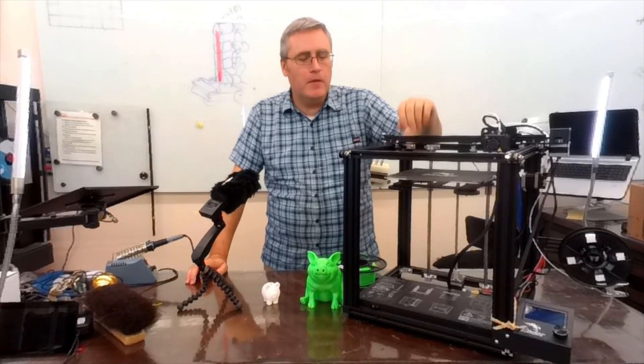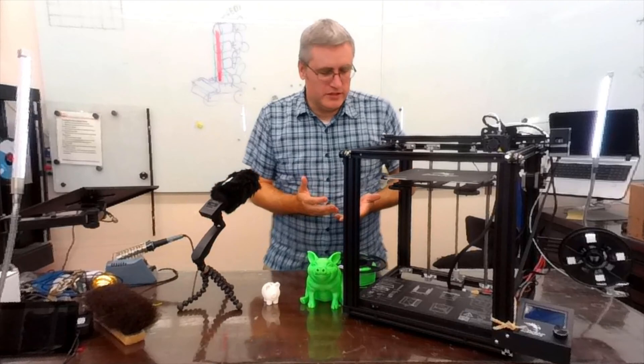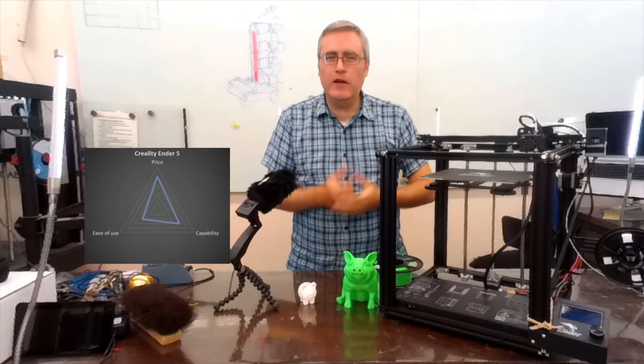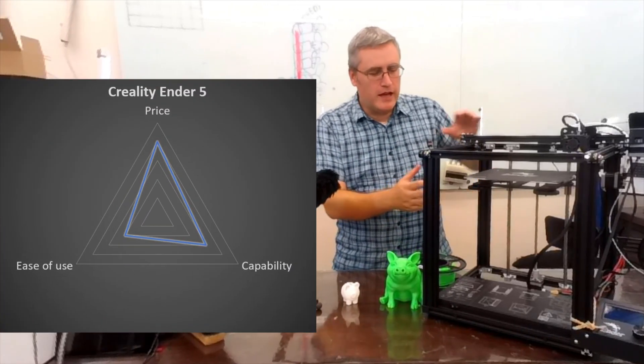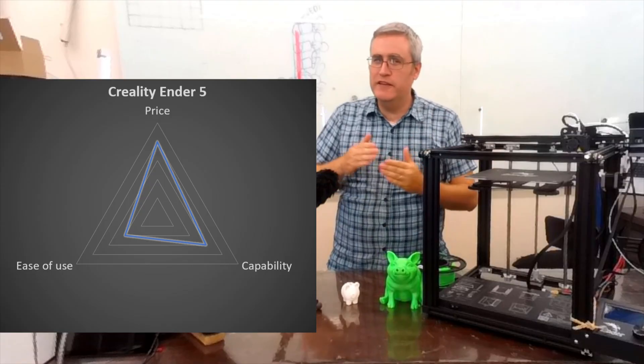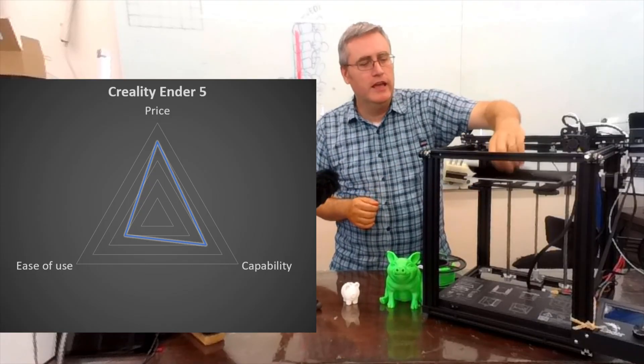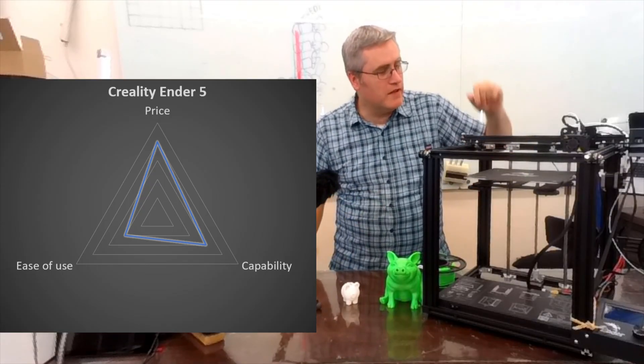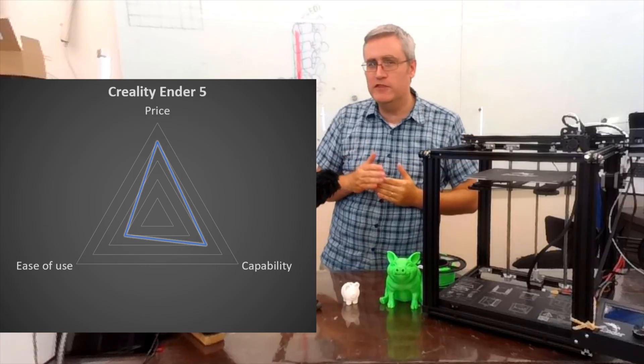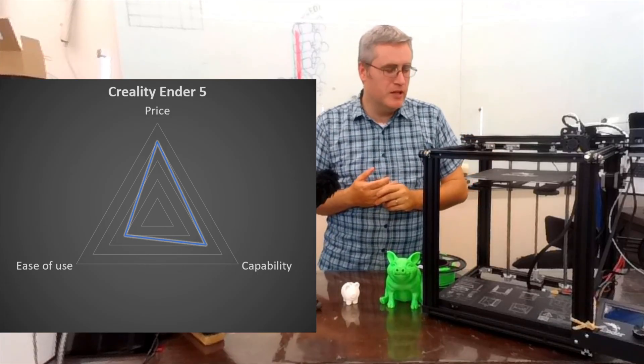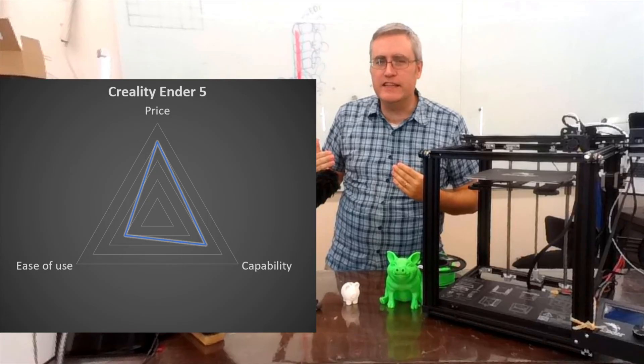Now how do I rate this machine? Well, if I compare it to the Ender 3, it's got a larger build volume which gives it a bump in capability. It's got a removable build plate, it's got a filament out sensor, so that gives it a bump in ease of use.